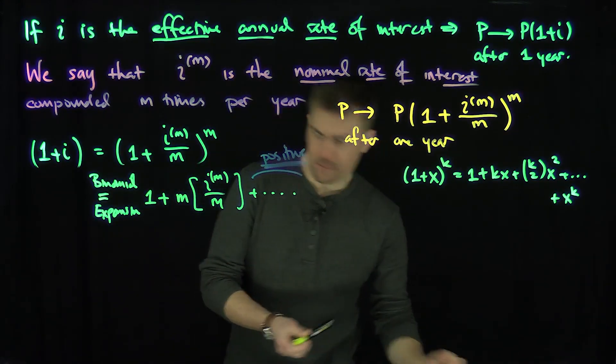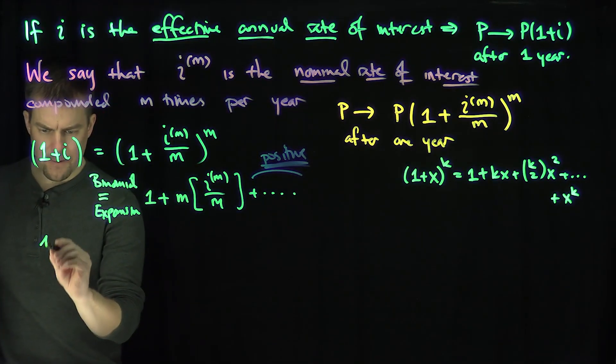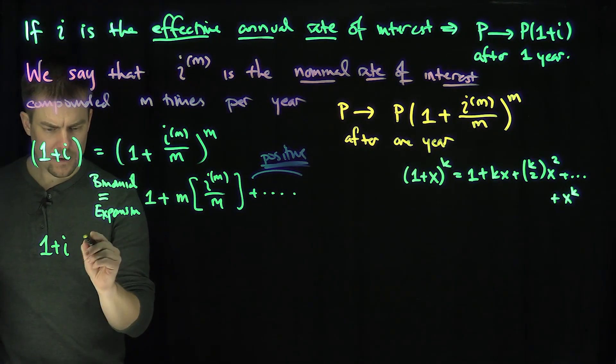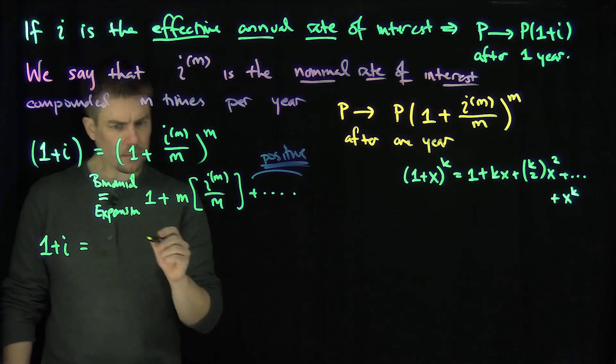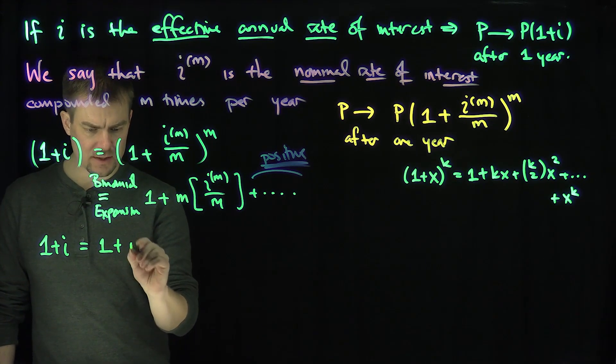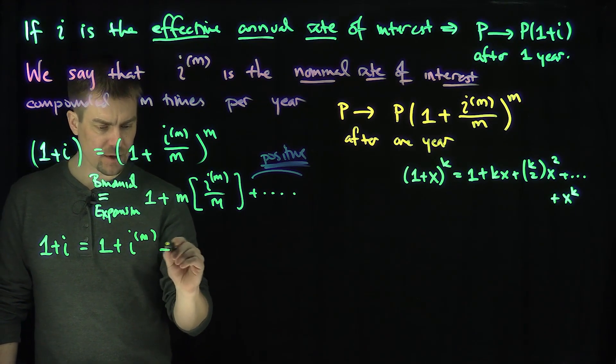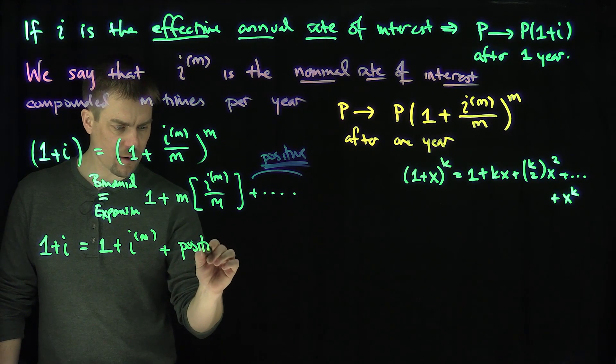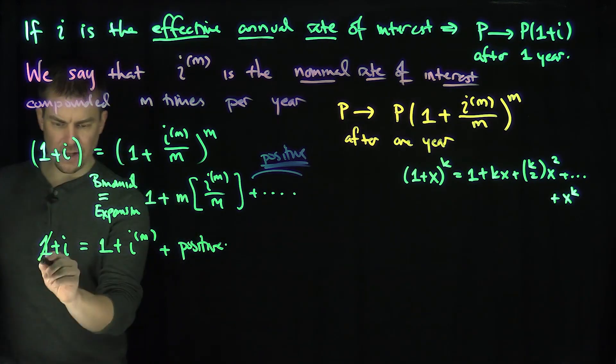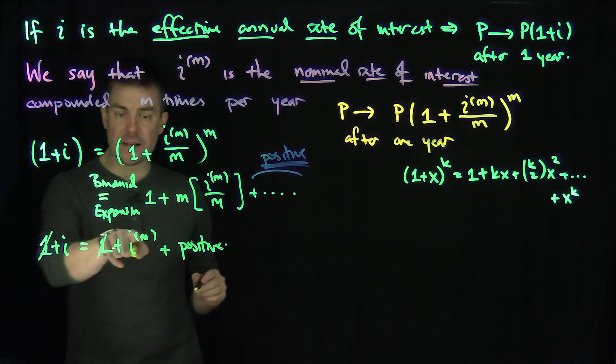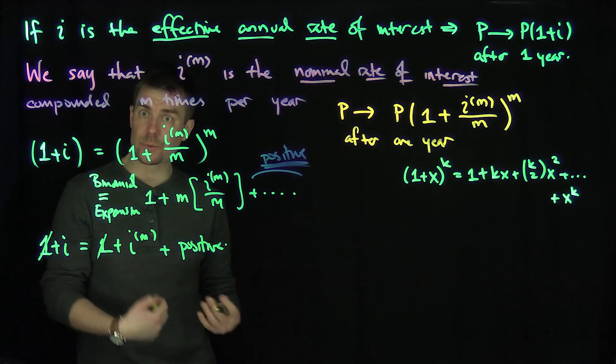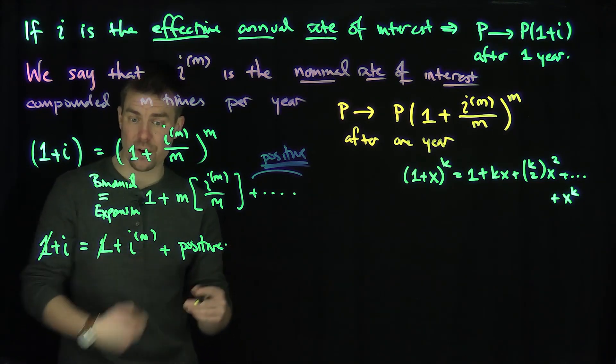So what do we have? We have that 1+i is equal to 1+i_m plus other positive terms over here. So the 1 will cancel out on both sides of the equation, and i is equal to i_m plus other things, which exactly means that i is greater than i_m.